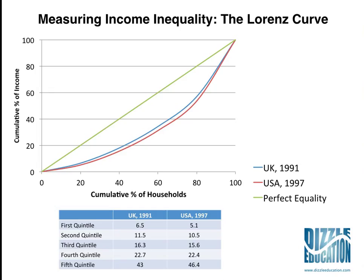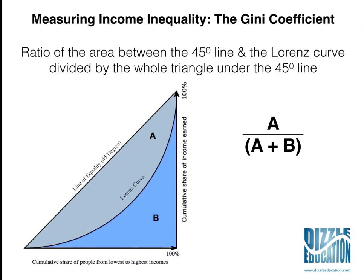Rather than drawing these graphs, economists more commonly use data that's much easier to represent and visualise — it's called the Gini coefficient. That's calculated by taking area A, which is the grey area between the 45-degree line and the Lorenz curve on the graph, divided by the total area A plus B — the whole area underneath the 45-degree line. Do that calculation and the number you get is your Gini coefficient.